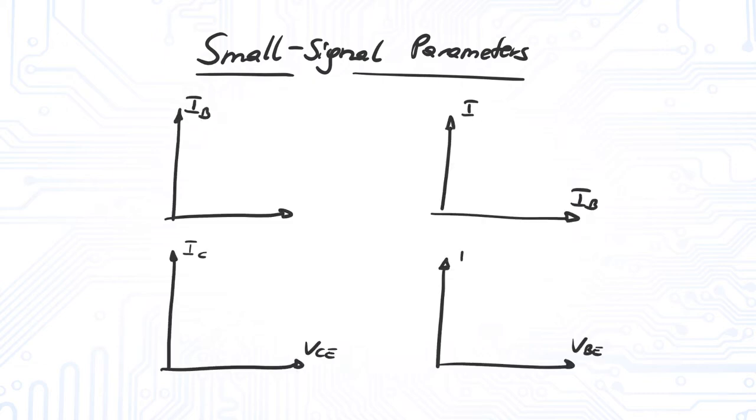These linear functions are determined by the small signal parameters. There are a couple of small signal parameters which are derived from the different characteristics of our transistor.